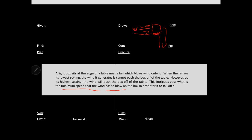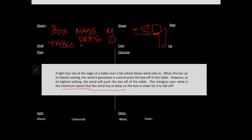We want to figure out what we know about this situation. We know there's a box and a table. The box should have a mass — we'll call that M. It should have a drag coefficient so that it couples to the wind. We'll use quadratic drag and put all that in one drag coefficient D. The table should have some friction with the box, and we'll call that mu.